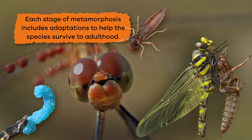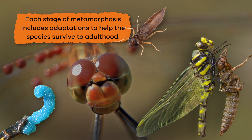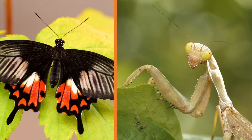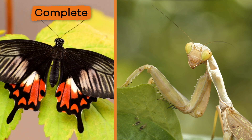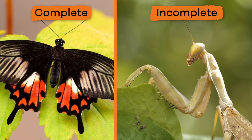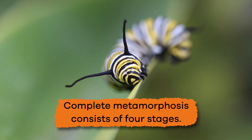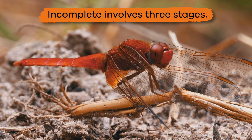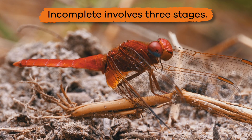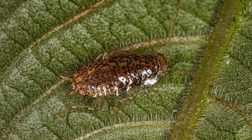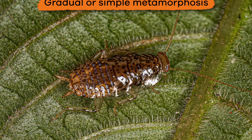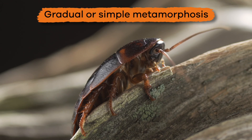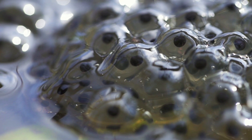Each stage of metamorphosis includes adaptations to help the species survive to adulthood. There are two types of metamorphosis: complete and incomplete. Complete metamorphosis consists of four stages, and incomplete involves three. Sometimes incomplete metamorphosis is called gradual or simple metamorphosis.